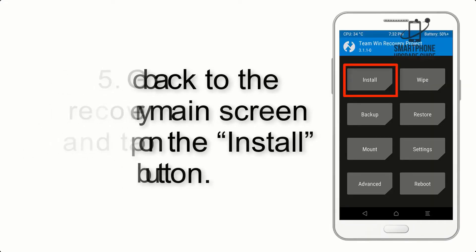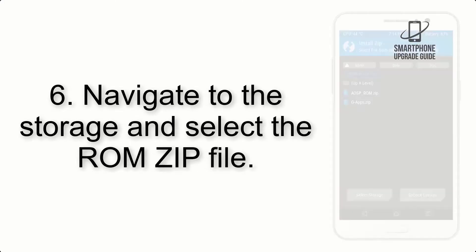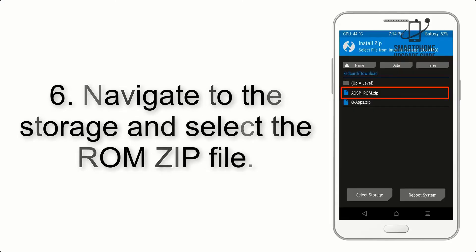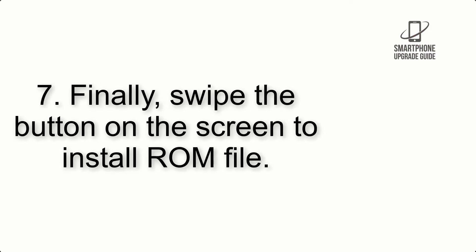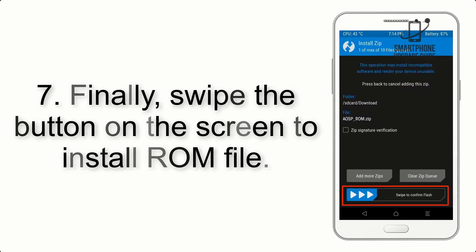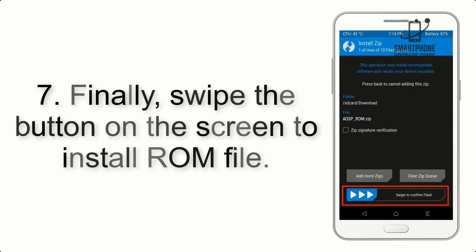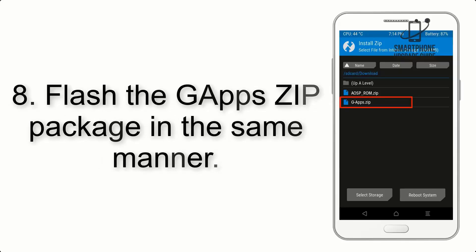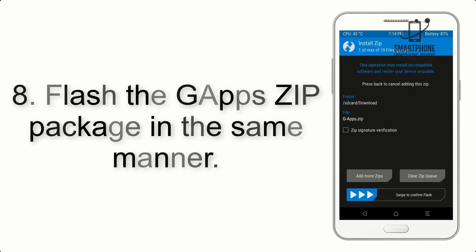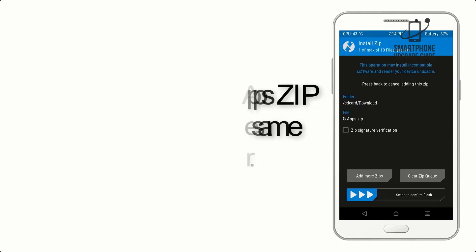Step 5: Go back to the recovery main screen and tap on the Install button. Step 6: Navigate to the storage and select the ROM zip file. Step 7: Finally, swipe the button on the screen to install the ROM file.